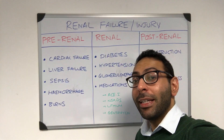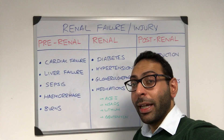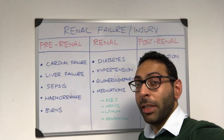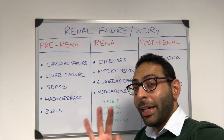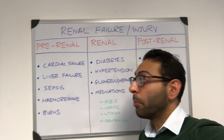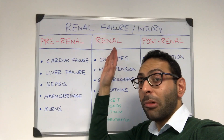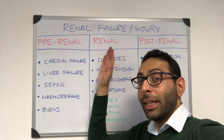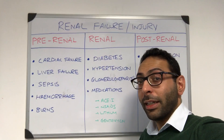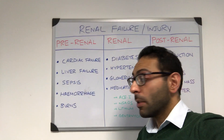When seeing a patient with deteriorating renal function — whether an acute kidney injury picture or a more chronic renal failure picture — think about three key categories: pre-renal problems (problems before the kidney), renal problems (problems within the kidney), and post-renal problems (problems after the kidney itself).